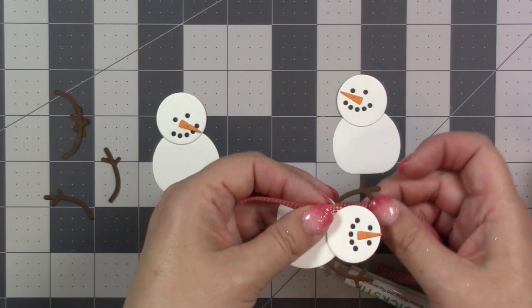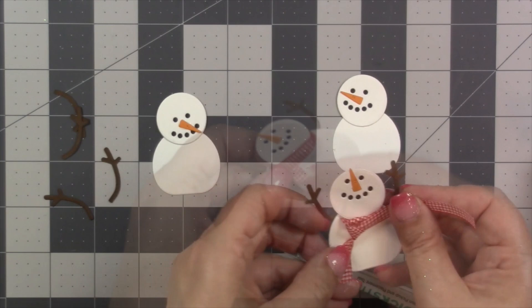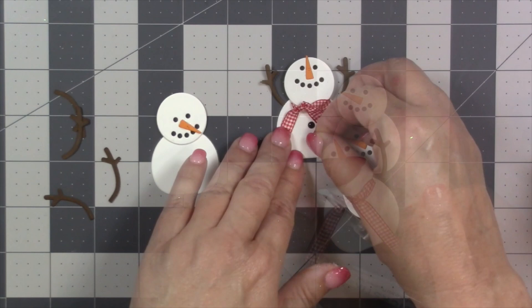For adding ribbon scarves I like to just cut a little slit in the body right below the head and that way I can tuck my ribbon actually into that slit as I wrap it around. Just makes it easier to get it started then I can just tie whatever knot I want to create the scarf. Then I'll add two black enamel dots to each snowman to be the buttons.